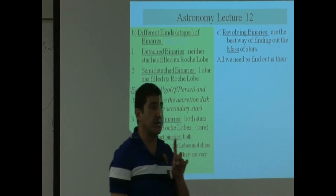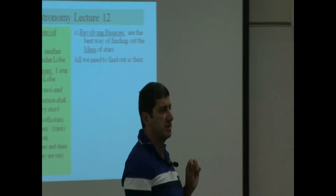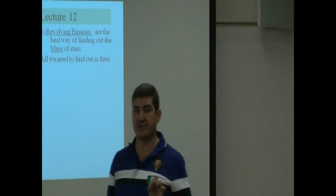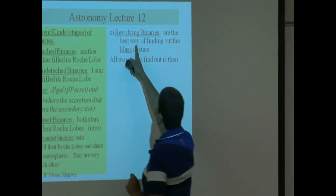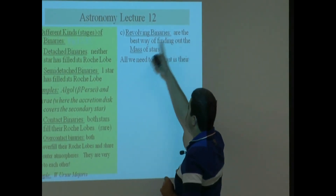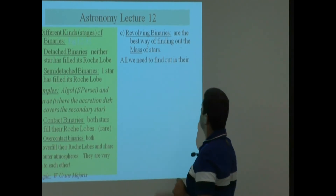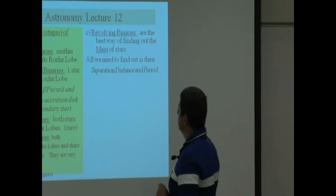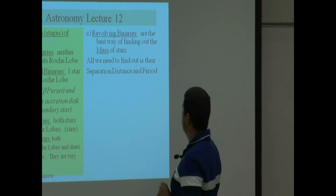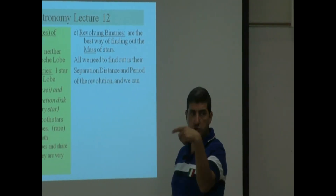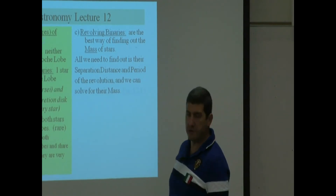Revolving binaries, if we discover them, are an excellent way for us to predict the mass of stars. Revolving binaries are the best way of finding out the mass of stars. All we need to find out is their separation distance from each other and their period of revolution, and then we can solve for their mass.